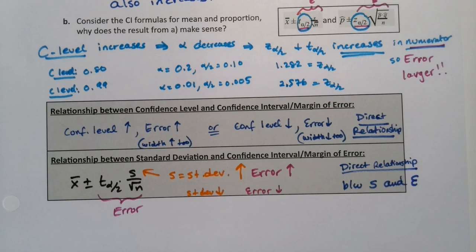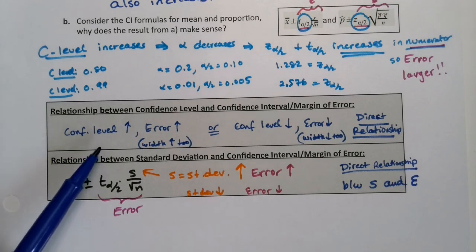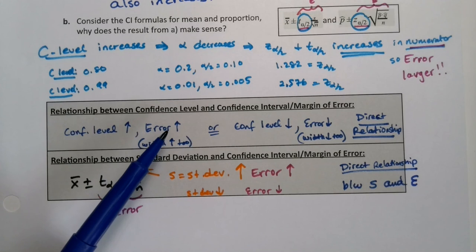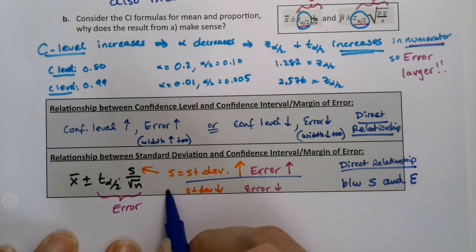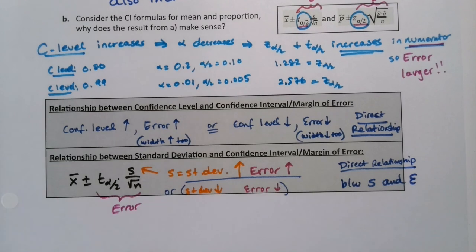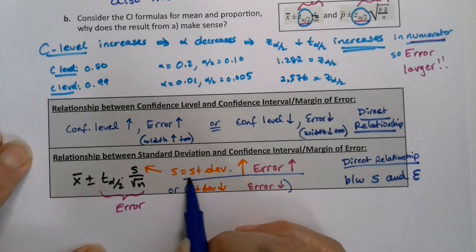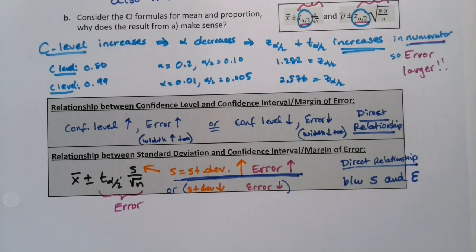All of these had direct relationships except for N. The T and S are both in the numerator, so when confidence level or standard deviation increases, it causes the error to increase. N is different because it's in the denominator — that's why there was an inverse relationship for N, but a direct relationship for everything else.